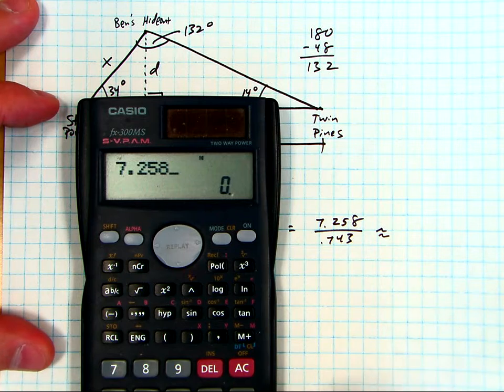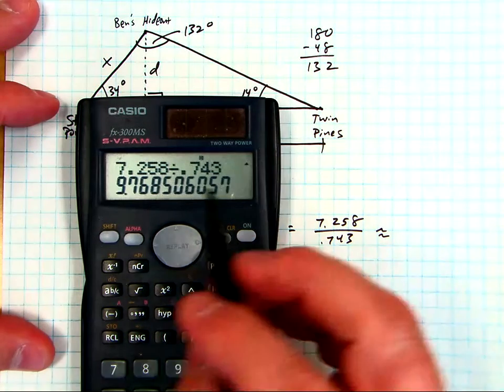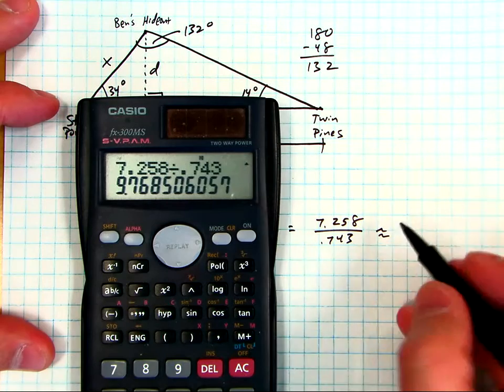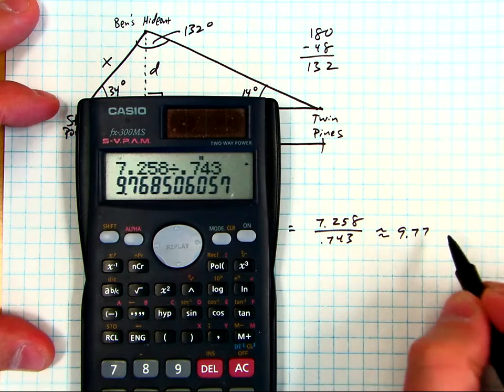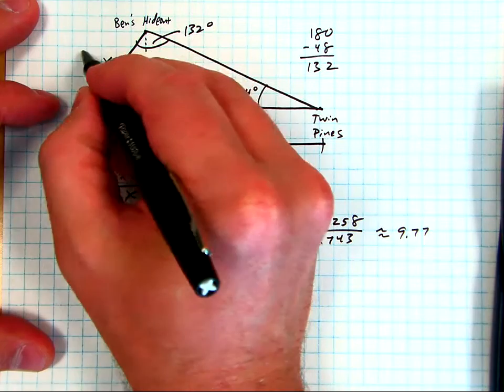There's a little bit of rounding error but it should get us close. Divided by 0.743 equals 9.77. Okay, so we know this distance right here is 9.77 miles.